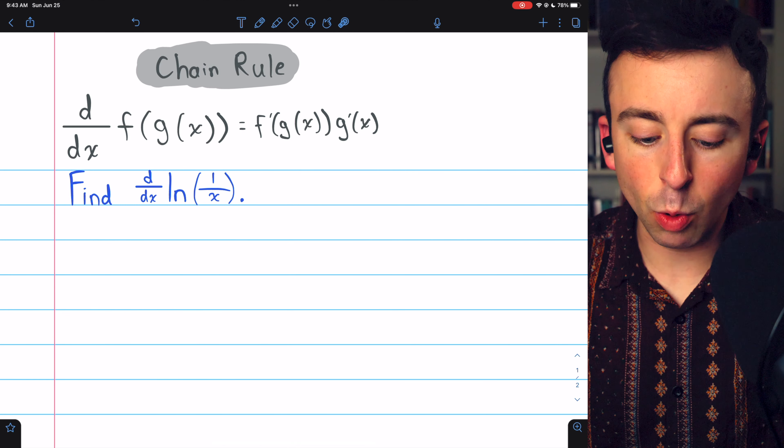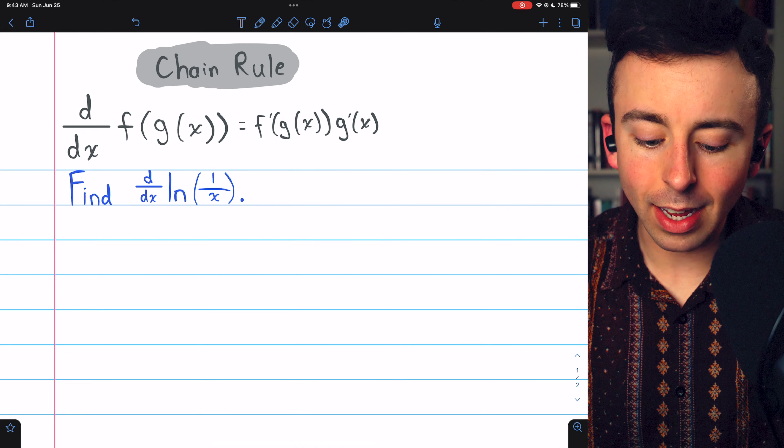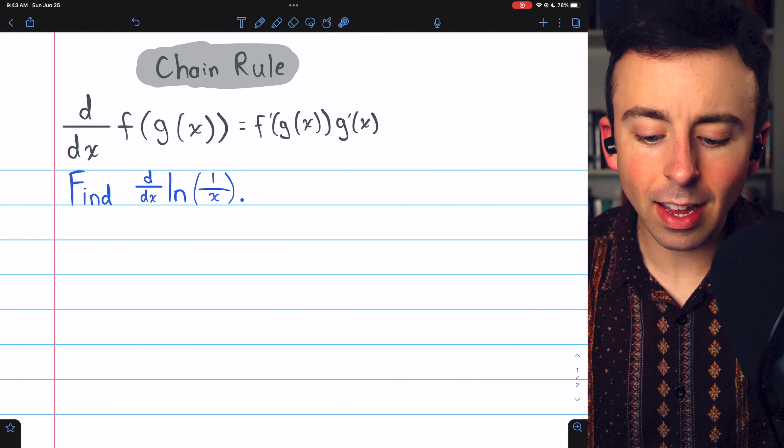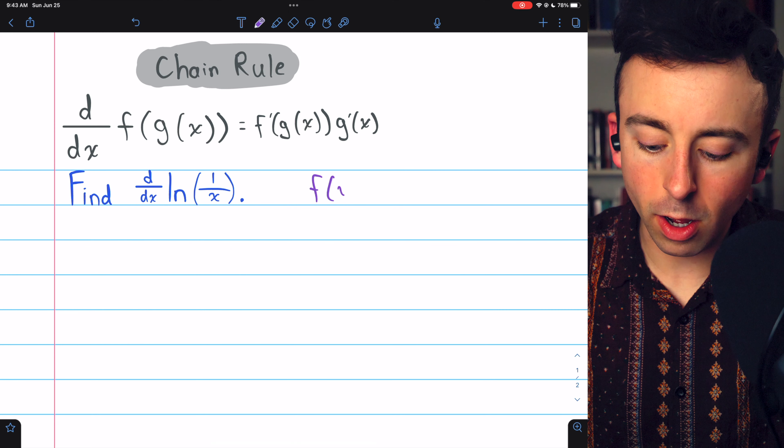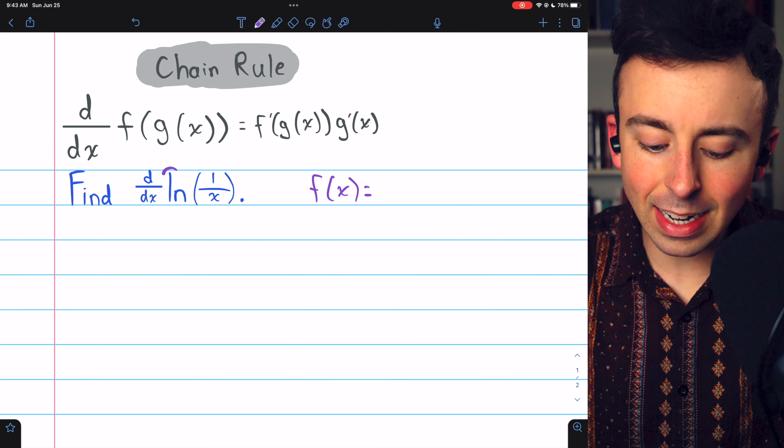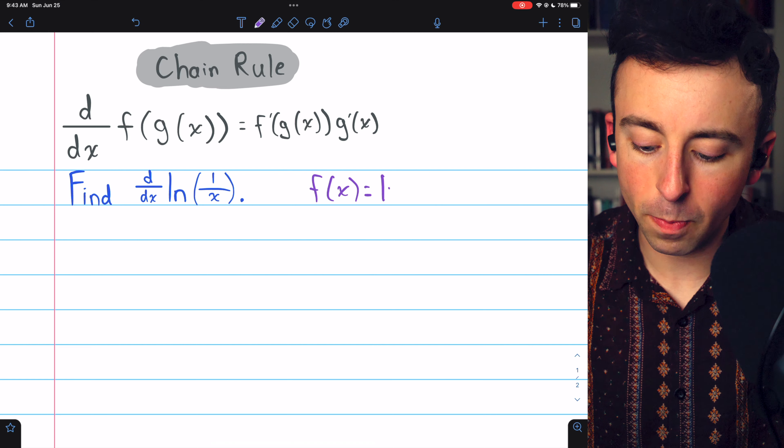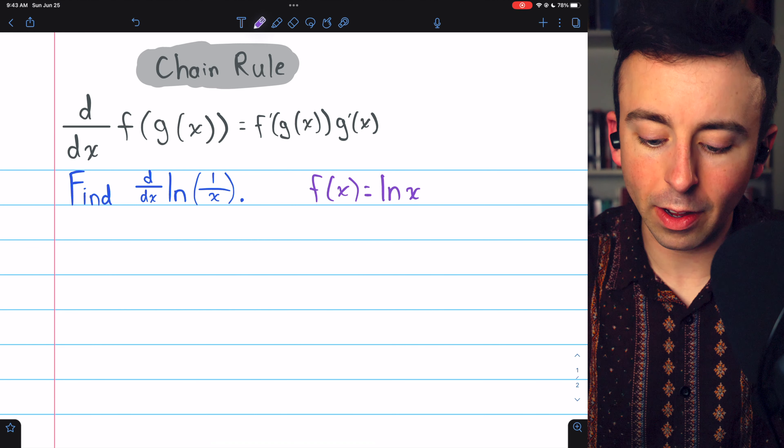So we need to accurately identify our outside and inside function in this case, and then we can apply the chain rule. In this problem, the outside function, which we may call f of x, is the natural log of a thing, so f of x is the natural log of x.